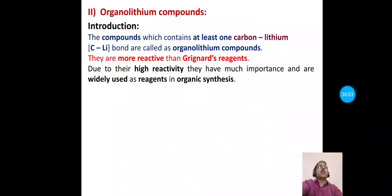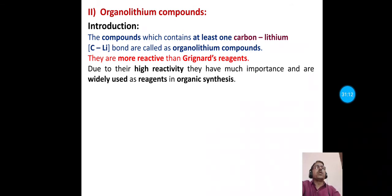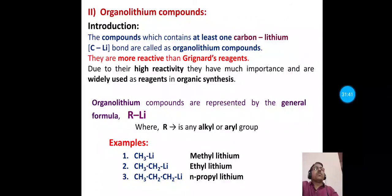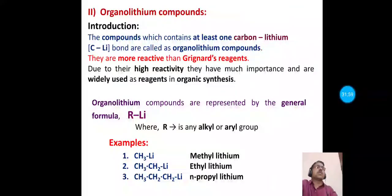The next organometallic compounds to study are organolithium compounds — compounds containing at least one carbon-lithium bond. They are more reactive than Grignard's reagent, and due to their high reactivity, they are widely used as reagents in organic synthesis. The general formula is RLi, where R is any alkyl or aryl group. Some examples are methyl lithium (CH₃Li), ethyl lithium, and n-propyl lithium.